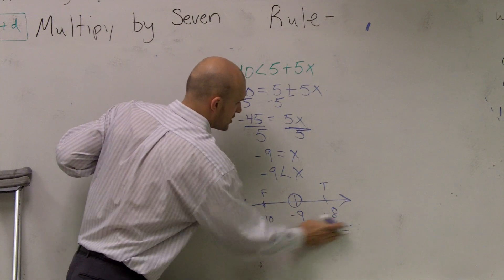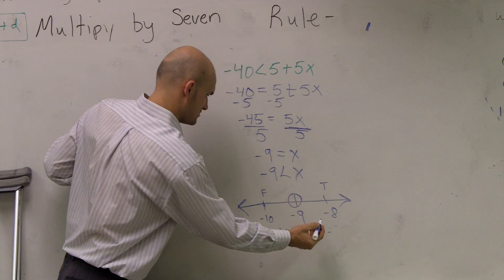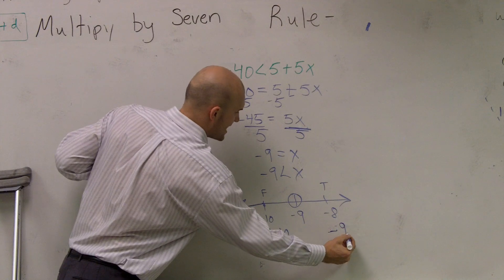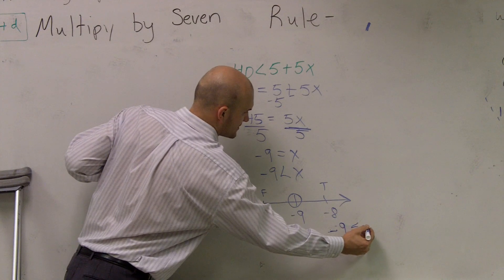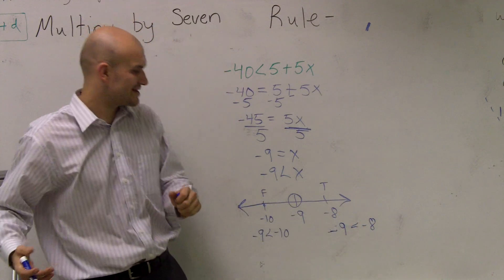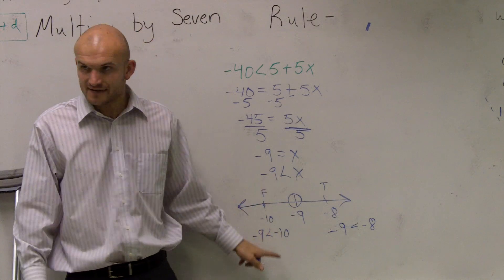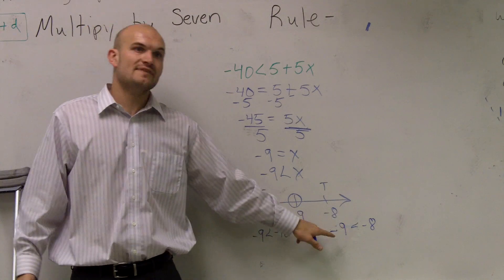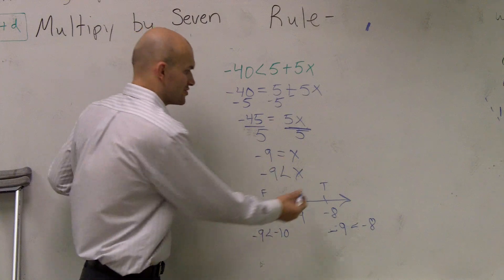Ah, shoot. I wrote it the wrong way though. -10. Sorry. -9 is less than -8. Sorry. I wrote it wrong. You're right. So, I have -9 is less than 8 to 10. That's false. Is -9 less than -8? And you say, yes, that's true.